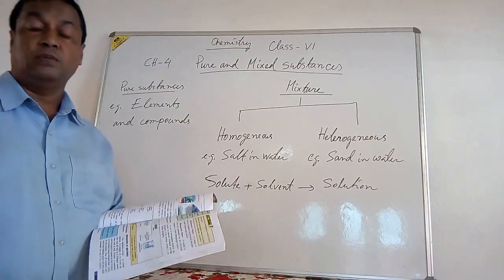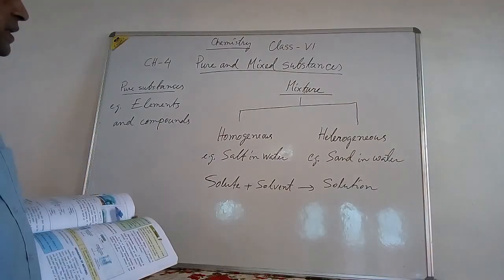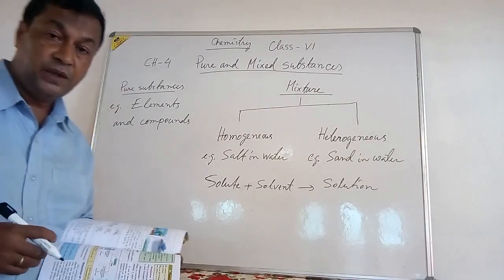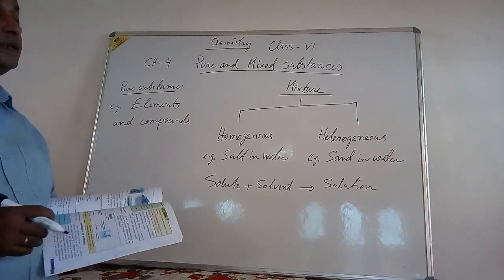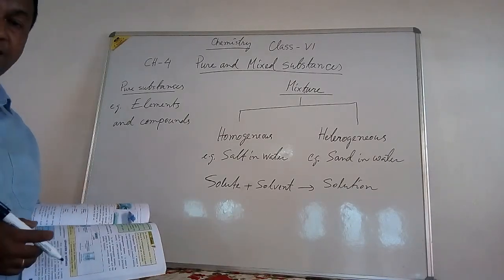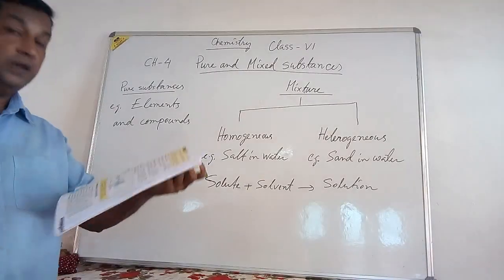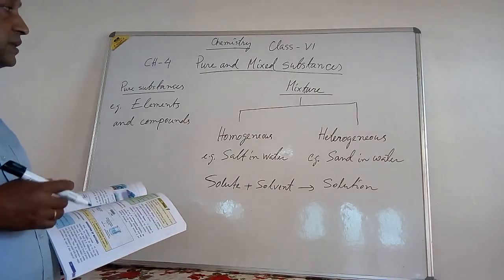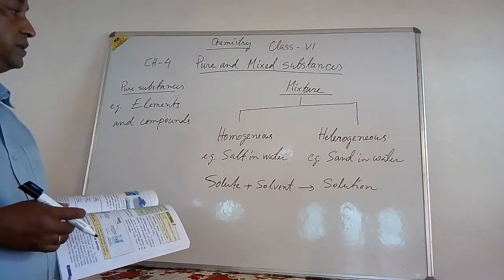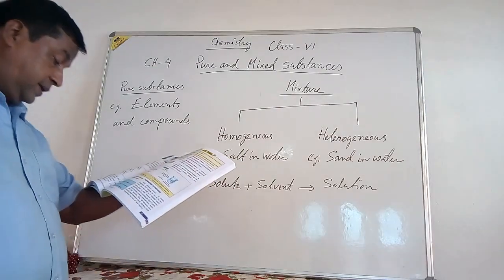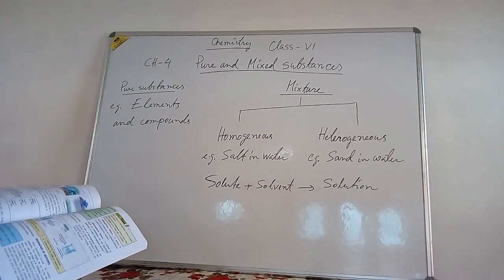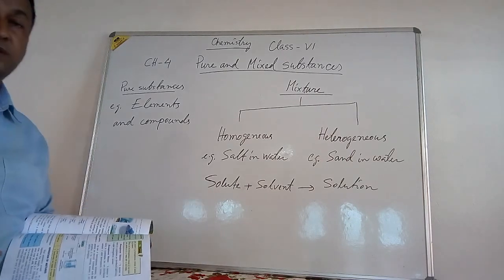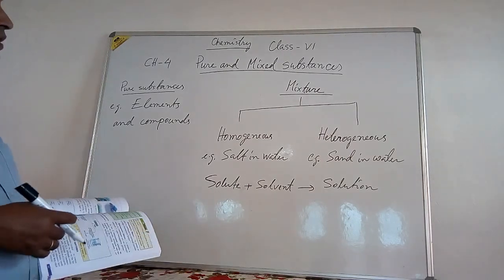The properties of a mixture include: the components retain their individual properties. You can separate the components by physical means. No energy change takes place during the formation of the mixture, because it is made by a physical process, not a chemical one. Also, a mixture will not have fixed melting point or boiling point, because it is made up of different substances or molecules.